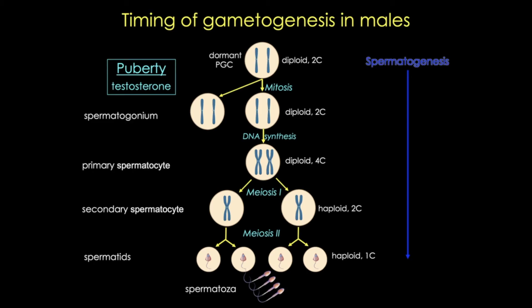Each step has different timing. Meiosis I, which is that reduction division — diploid to haploid — will take days, while meiosis II, the equatorial division or separation of the sister chromatids, will happen in hours. So it's actually very hard to even see a secondary spermatocyte in an H&E stained section of the seminiferous tubules. At this point, spermiogenesis events will begin as the spermatids differentiate into more mature spermatozoa, but full maturation of sperm will occur after the spermatozoa exit the seminiferous tubules.